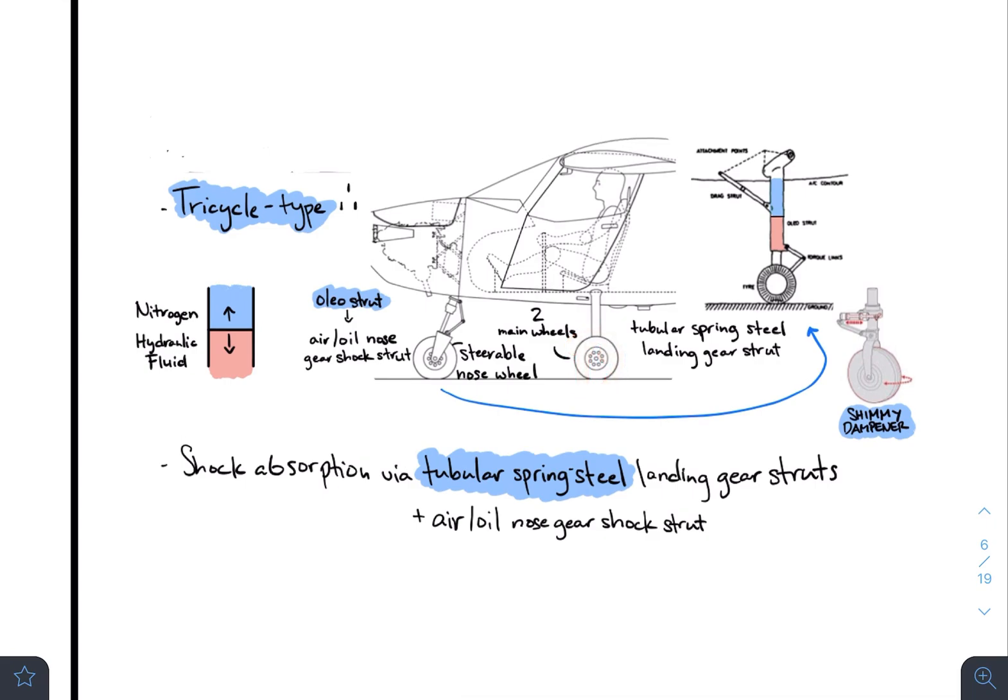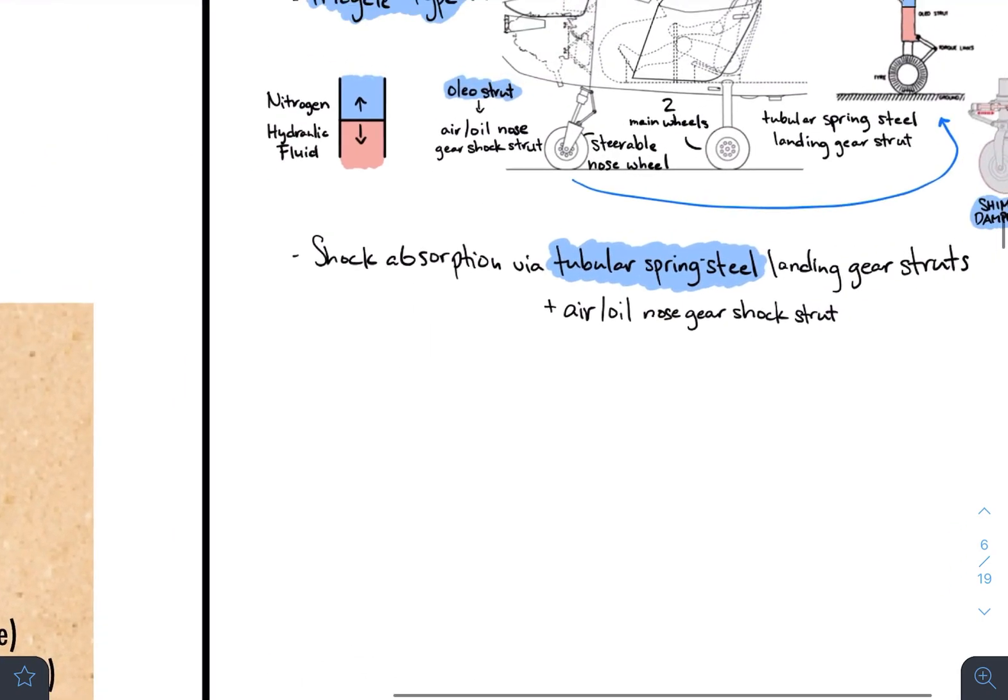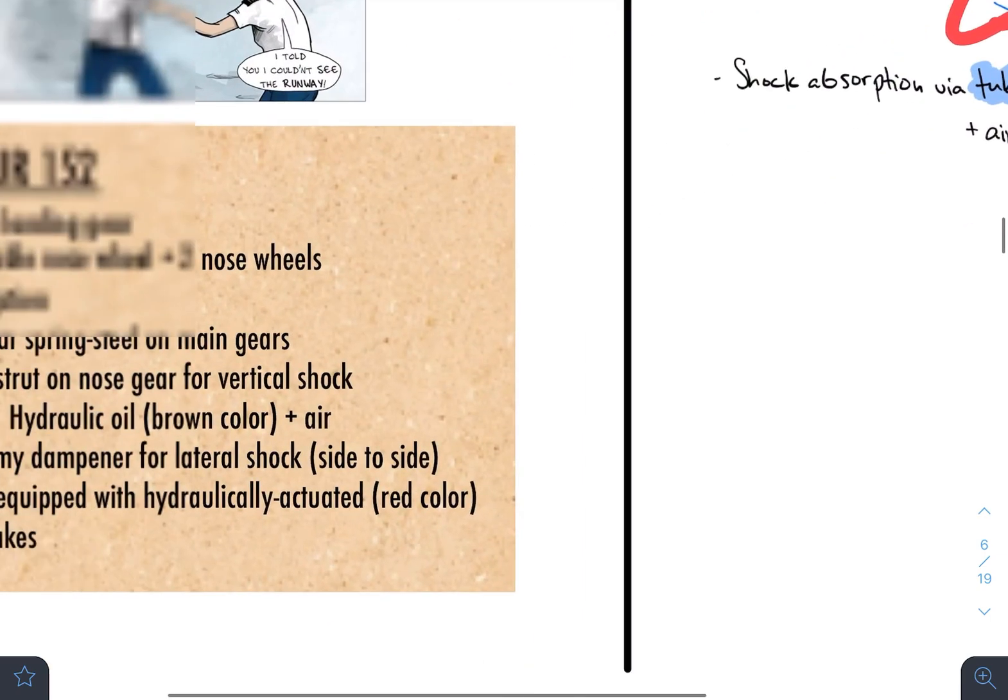Main difference between the two. This, you can steer. These two main wheels, you cannot steer. They just go straight. This is the one leading everything.